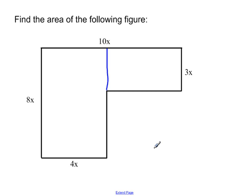Once you split it into two rectangles, let's find the area of rectangle one. Remember, area is base times height, which is going to end up being 4x times 8x. When we multiply those together, we get 32x squared.